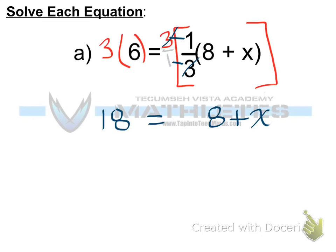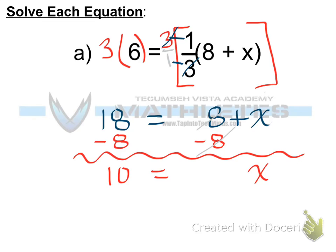So in this case, it makes most sense to isolate the variable on the right side by eliminating the constant term positive 8. If I see positive 8, I'm thinking the opposite, which is negative 8. And whatever we do to one side, we do to the other, and we end up with 10 on the left side and x on the right side.